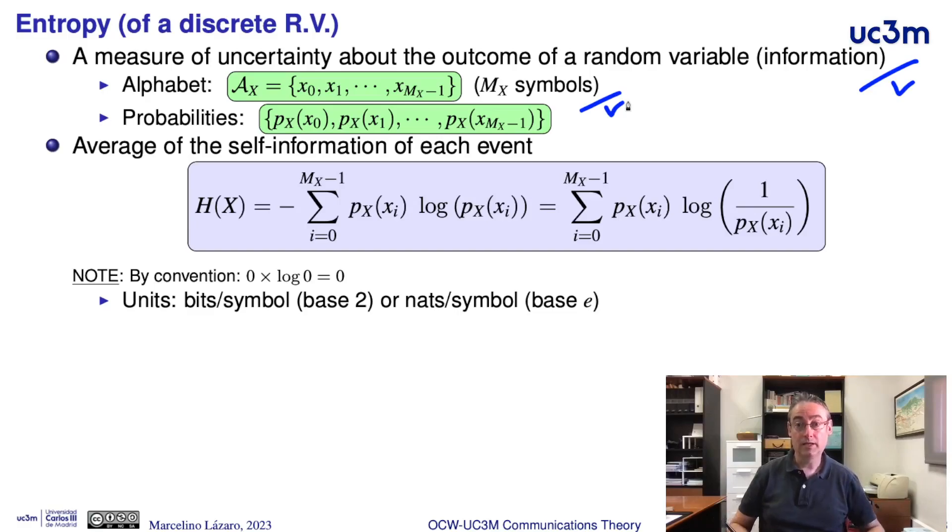the entropy is the average of the self-information for every event. Basically, we have the addition of minus the probability of each event times the logarithm of this probability. It is possible to change the negative sign to a positive sign if we invert the argument of the logarithm. This is just because of the properties of the logarithm function.